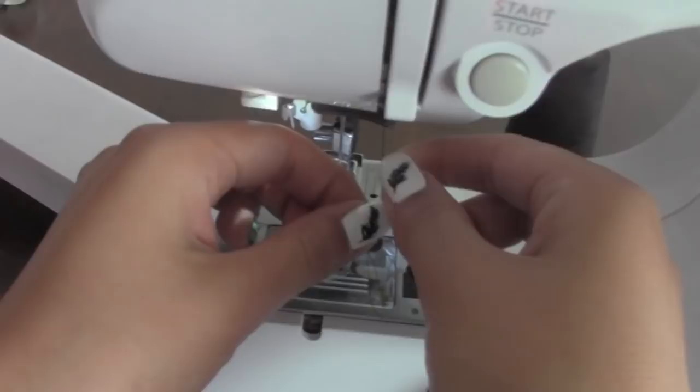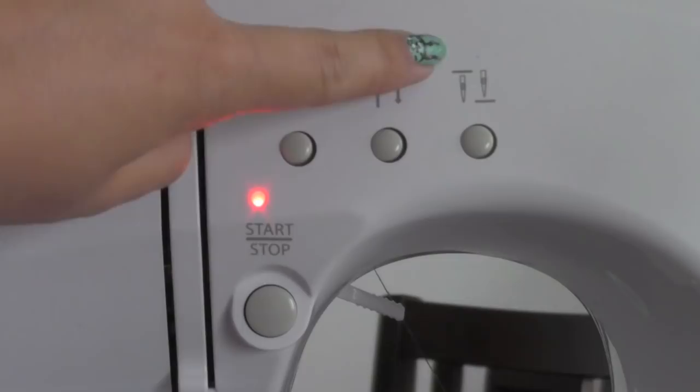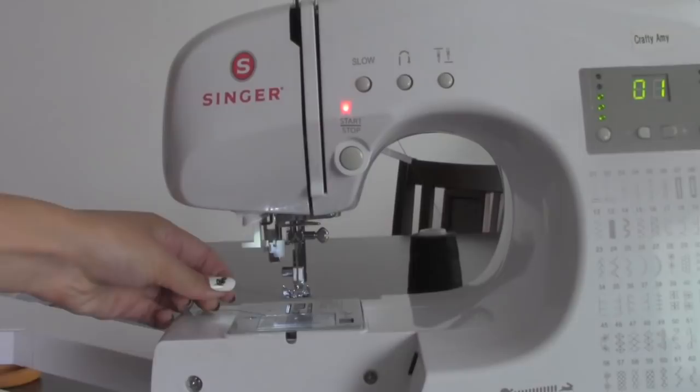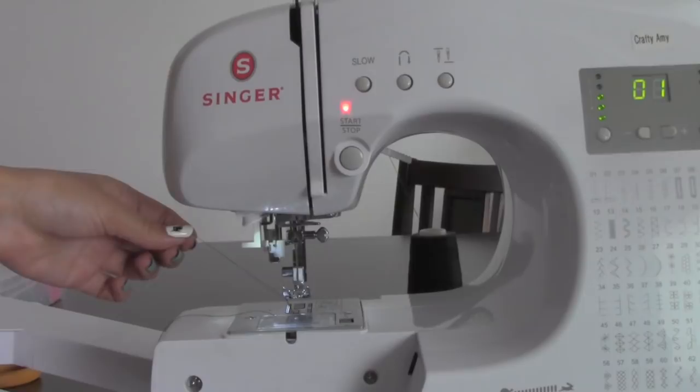Now I'm threading the upper thread the same way as the other machine. This is for the needle to go up and down once. It automatically lifts the lower thread. Hold the thread. Press this button. And pull the upper thread. Put the scissors through. Now you have both threads above the needle plate.